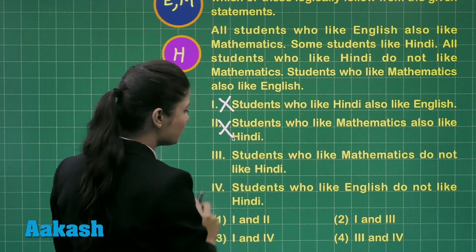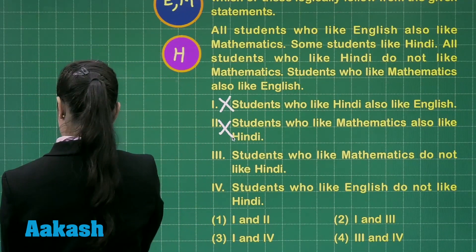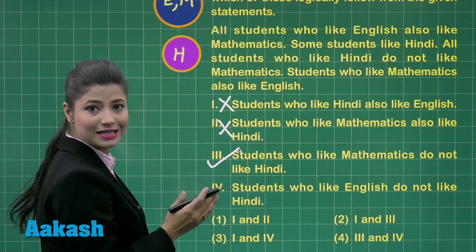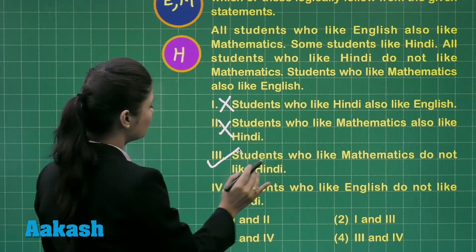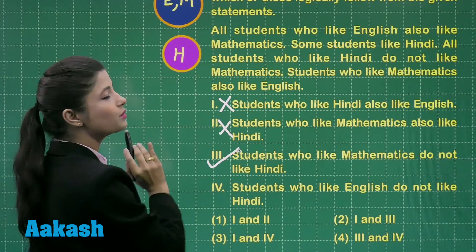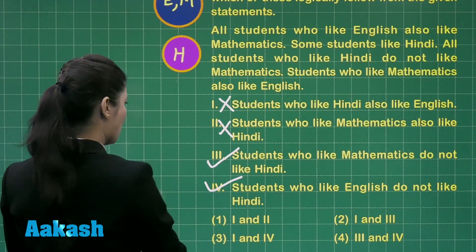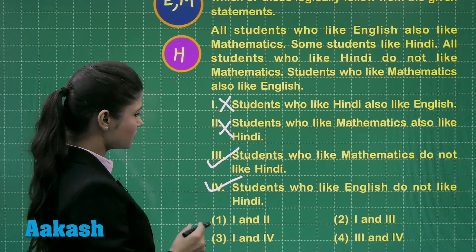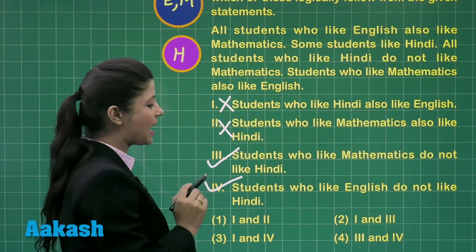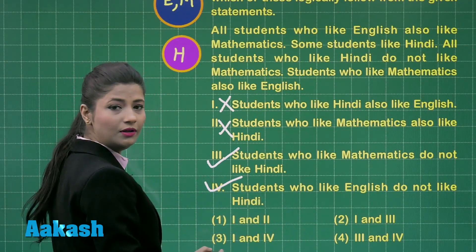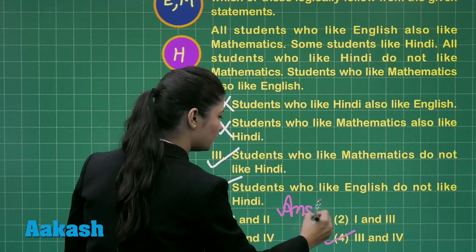Next it states: students who like mathematics do not like Hindi, which is quite evident from this statement. So this follows the given statements. Further, the fourth conclusion states: students who like English do not like Hindi. This also follows the given statement, so this is also correct. Considering these two correct conclusions out of the four options, we need to select the option showing third and fourth as the conclusions, which is clearly option number 4. So the answer to this question is option number 4.